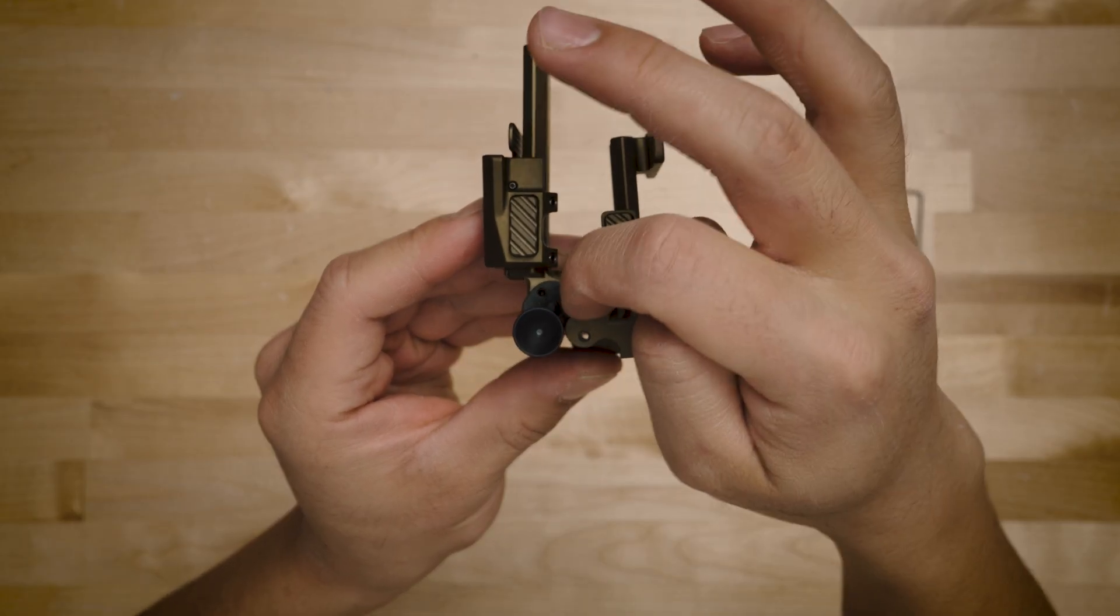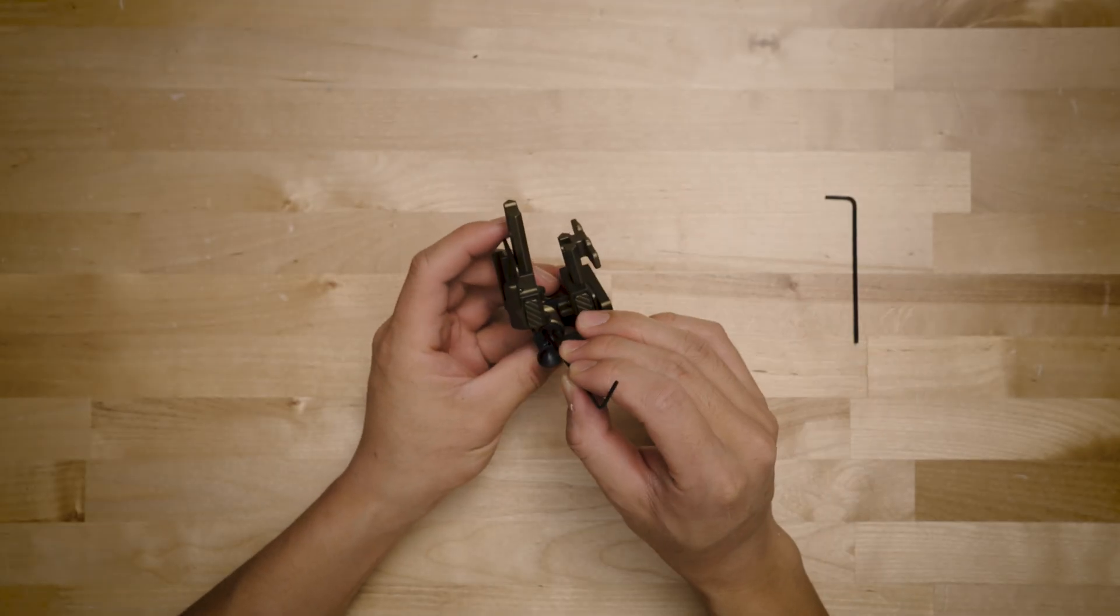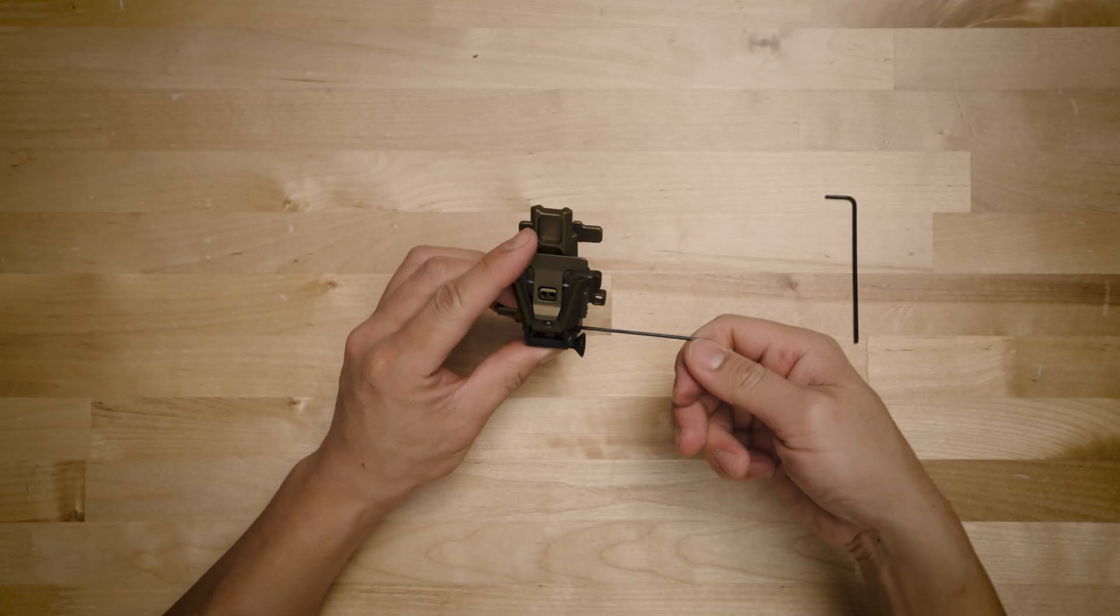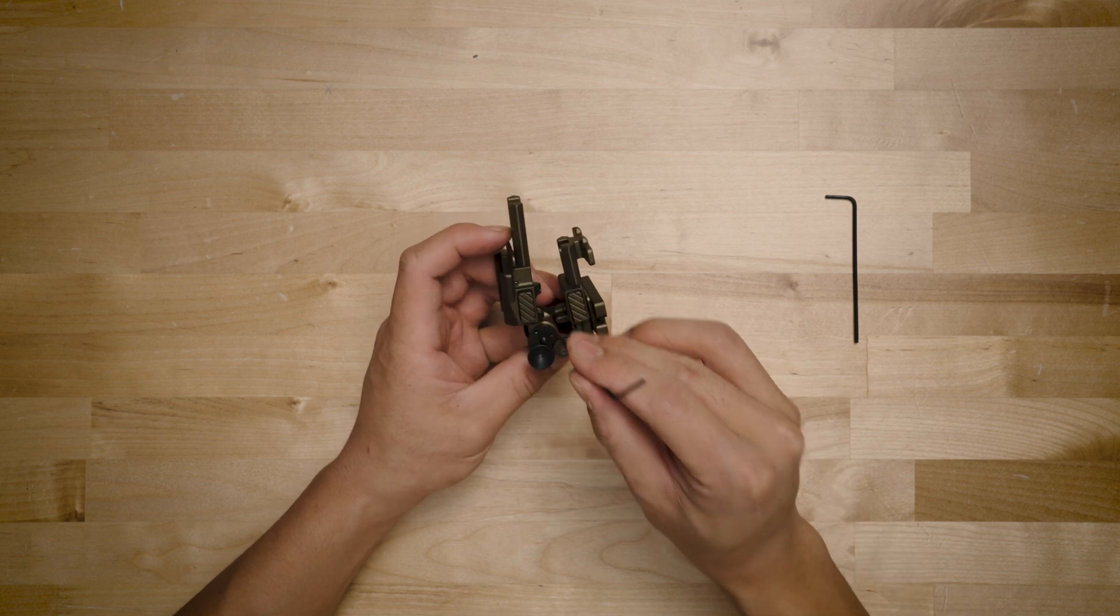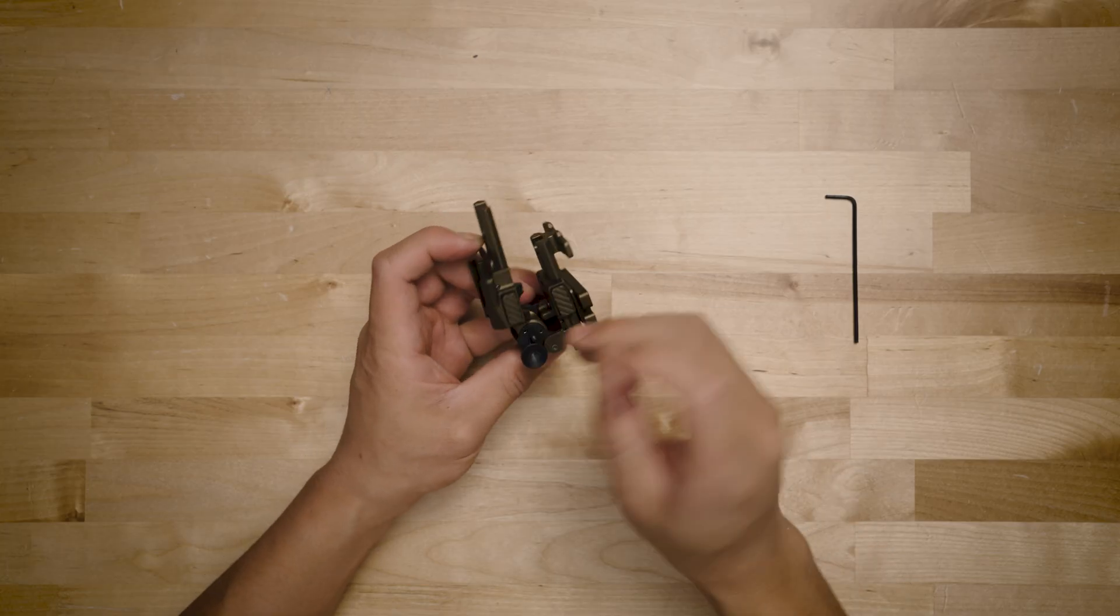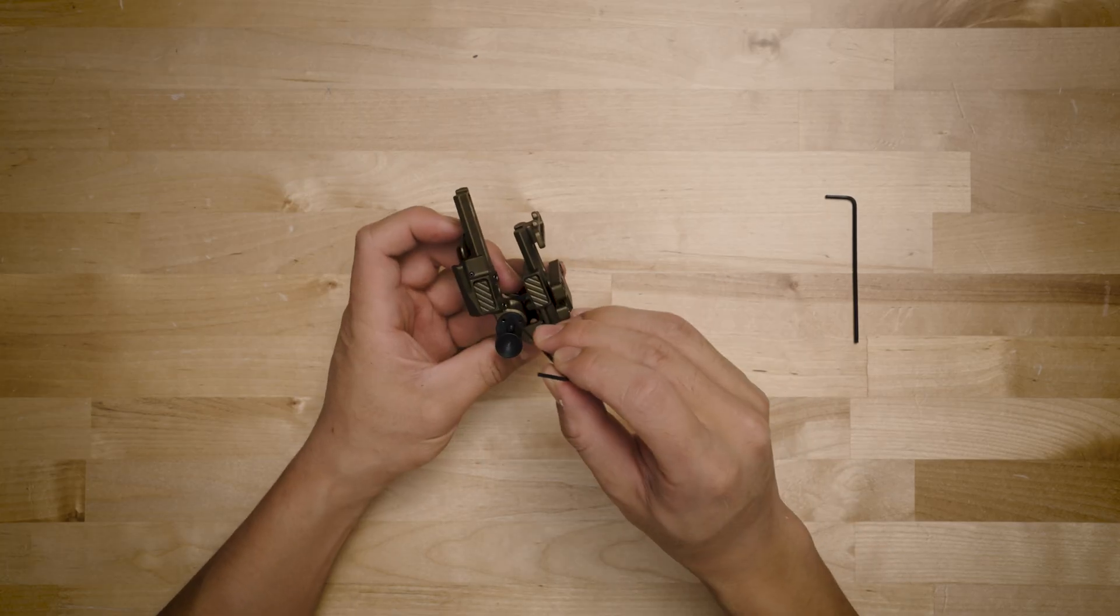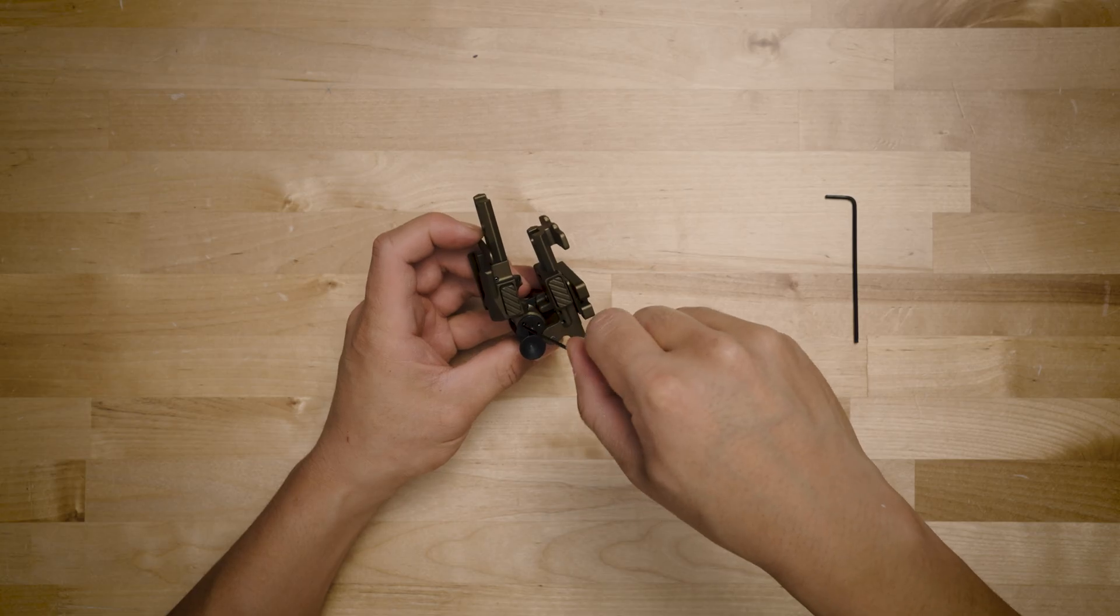Then you're going to take your 1/16th Allen key and you're going to put it in here and unscrew it all the way to de-load the bearings. Once you have it unscrewed all the way, you're going to feel it lock out against this bit of steel over here. And then what you're going to do is you're going to give it like a quarter turn in so it doesn't brush up against that material.